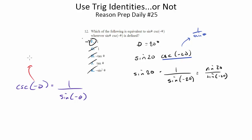as a side note, that sine of negative theta is the same thing as negative sine of theta. So we can transform this then into 1 over negative sine of theta.